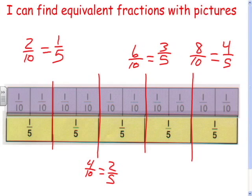So those are all equal. Two tenths equals one fifth, four tenths equals two fifths, and so on.